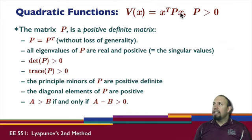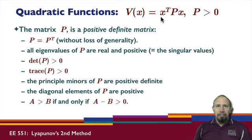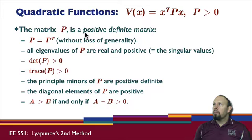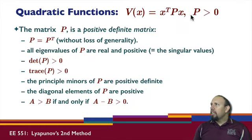One of the nice things about a quadratic form is that it is as simple a positive definite function as we can get, and it's nice because it's differentiable. It requires that the matrix in the middle, P, be a positive definite matrix.